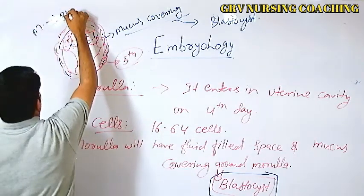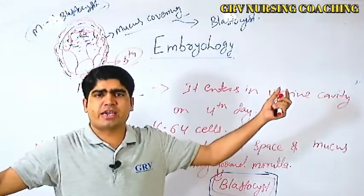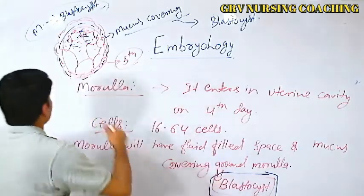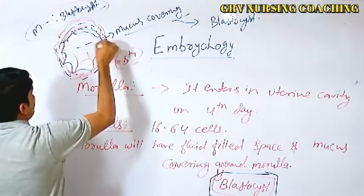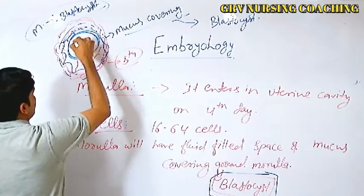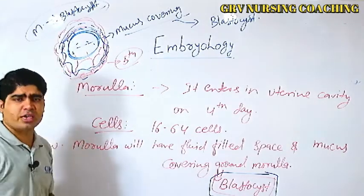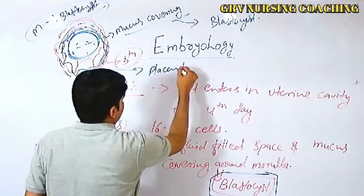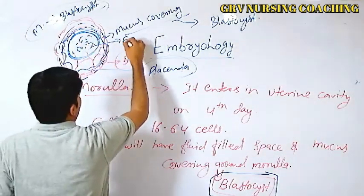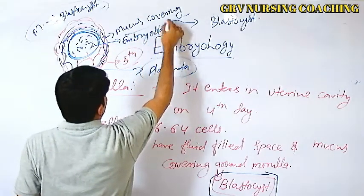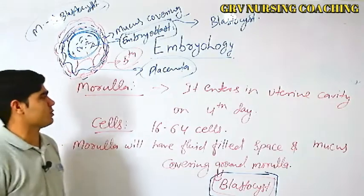The morula has converted into a blastocyst. The blastocyst will then blast — meaning it will rupture. The blastocyst will have two cavities: an outer cell mass and an inner cell mass. The outer cell mass is called the trophoblast, which will form the future placenta. The inner area is called the embryoblast, which will form the embryo.